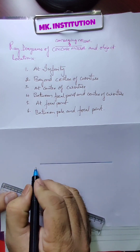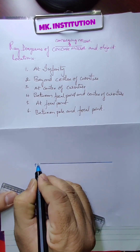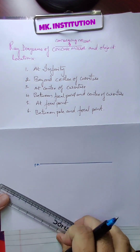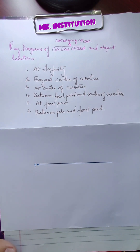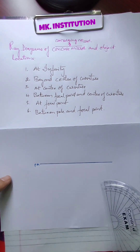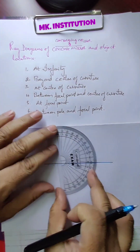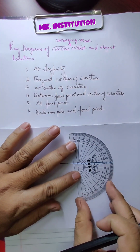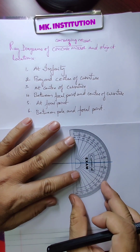This is the principal axis. This is the base diagram for all the ray diagrams — only for all ray diagrams, this is the basic one. You know, the principal axis and the curved surface — the curved surface of a concave mirror.